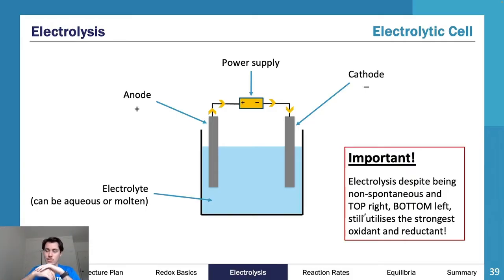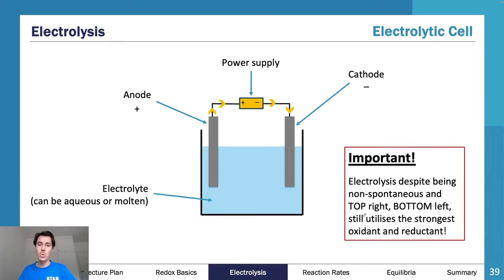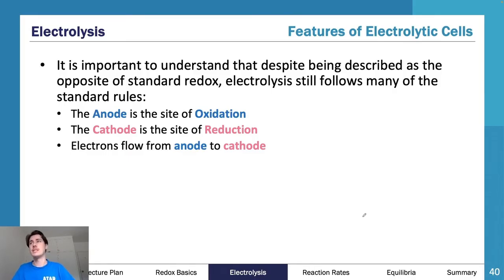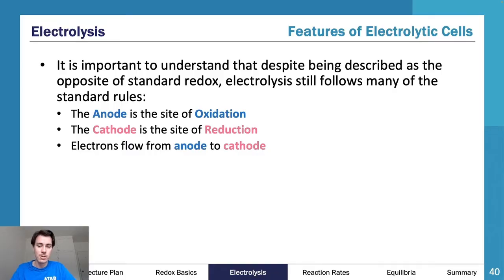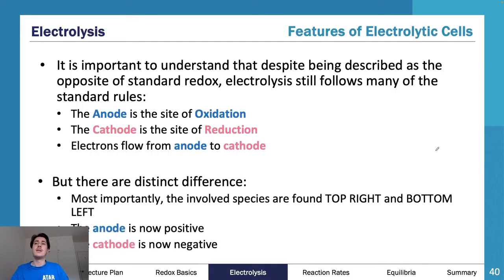Electrolysis still uses the strongest oxidant and the strongest reductant - that is just the reality. Despite being described as the opposite of standard redox, electrolysis still follows many standard rules: the anode is the site of oxidation, the cathode is the site of reduction, and electrons flow from anode to cathode. These rules do not change. The key distinct differences are that involved species are found top-right and bottom-left, the anode is now positive, and the cathode is now negative.